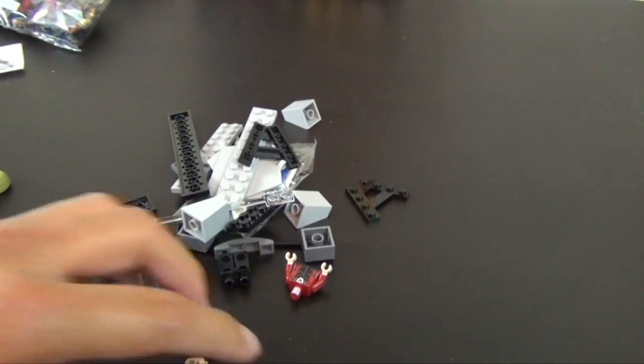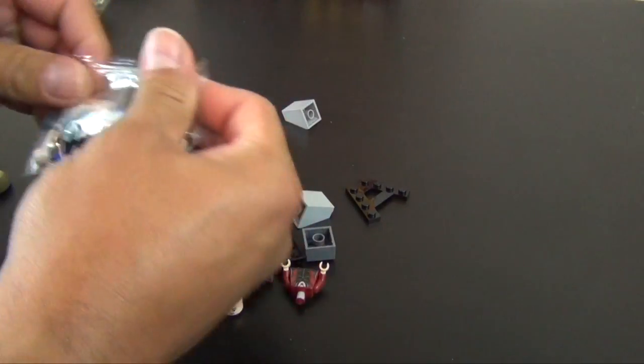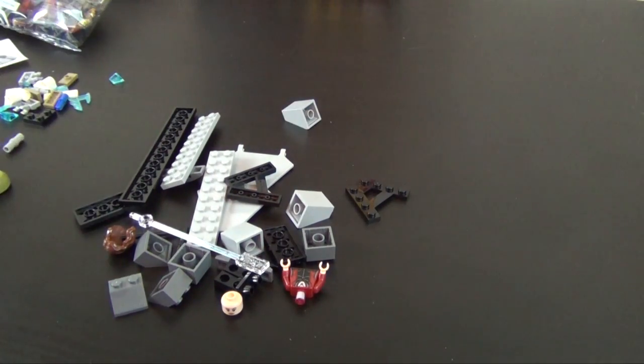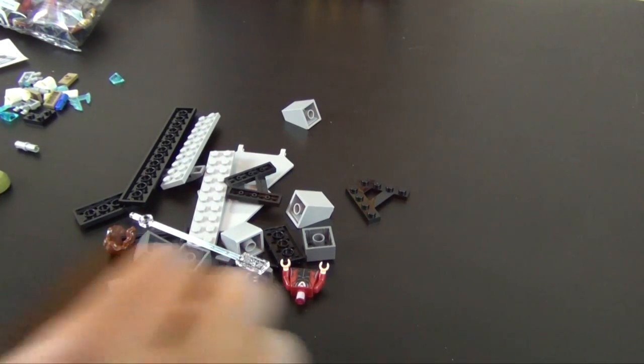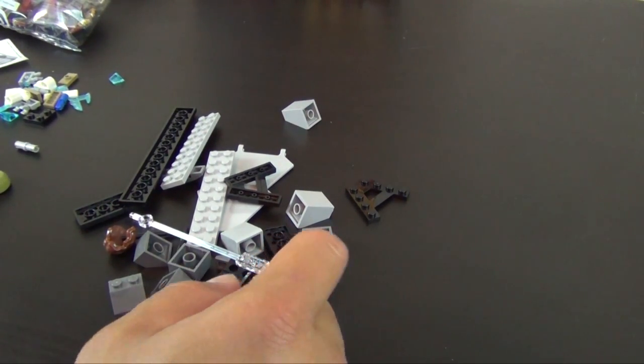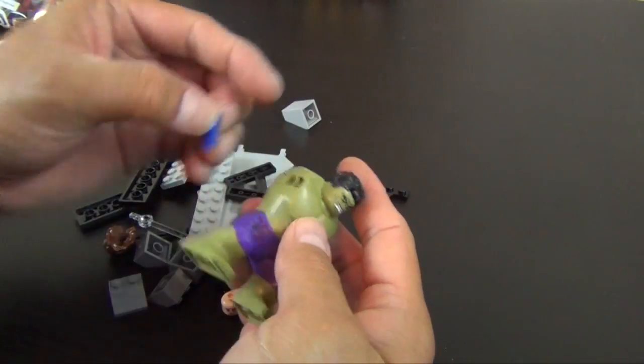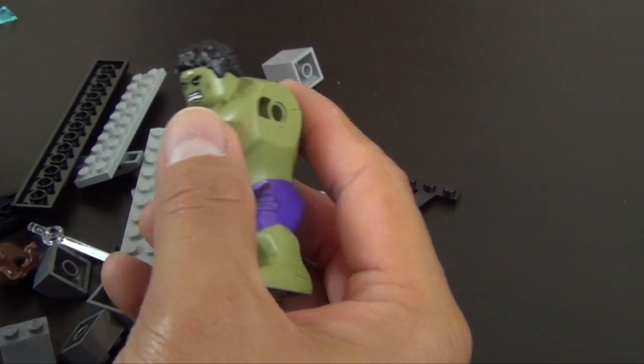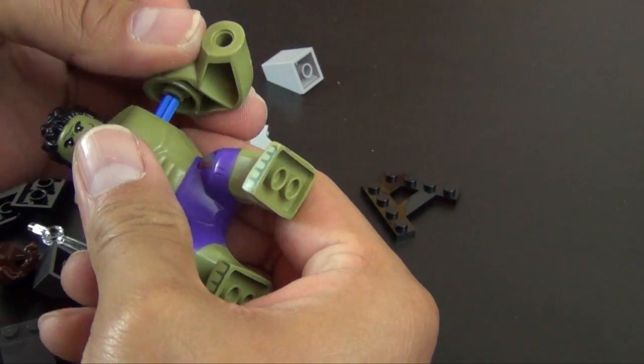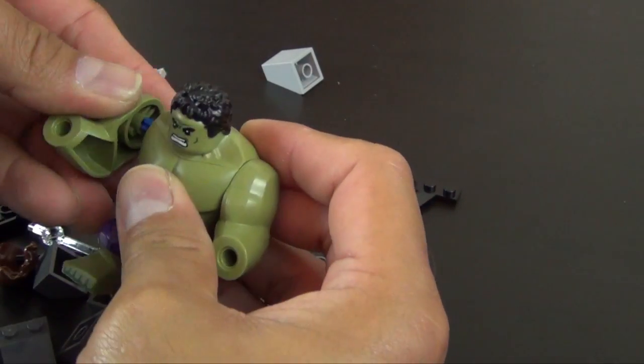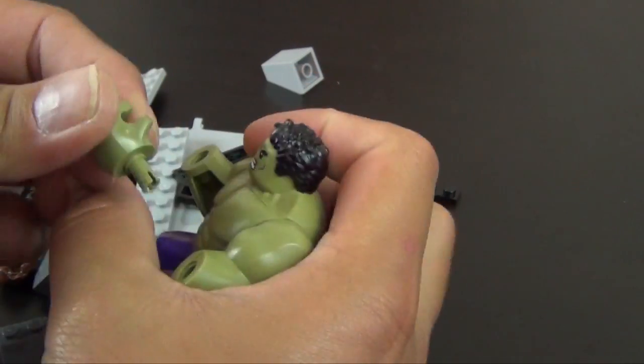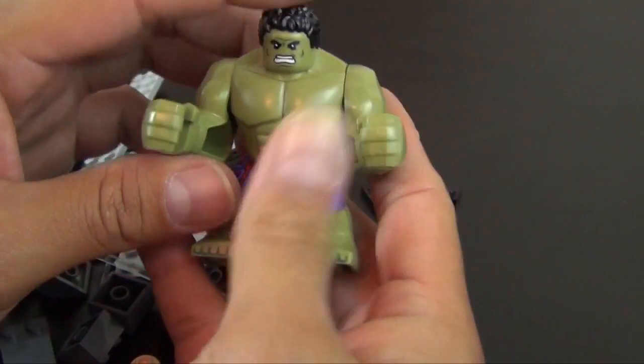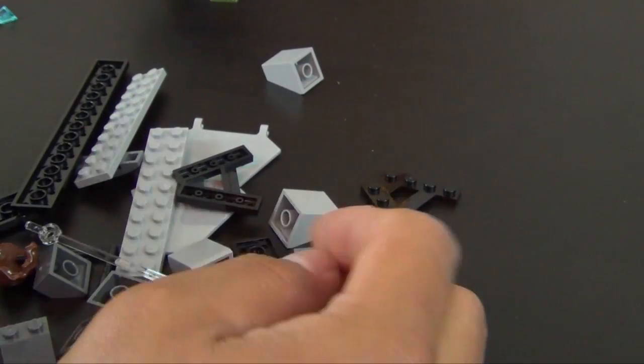Literally not much in this bag number one at all. There's a tiny bag of tiny parts. So we take these Technic pins with axle on the end, attach our Hulk arms, and the Hulk fists just snap right on there.